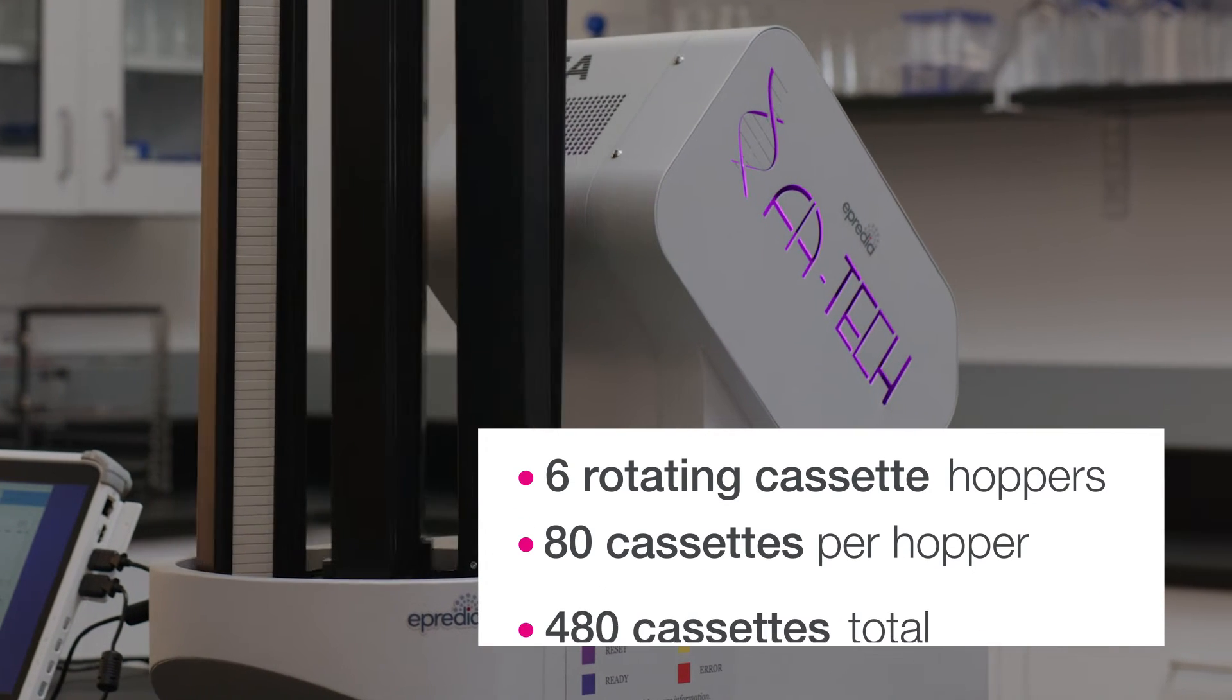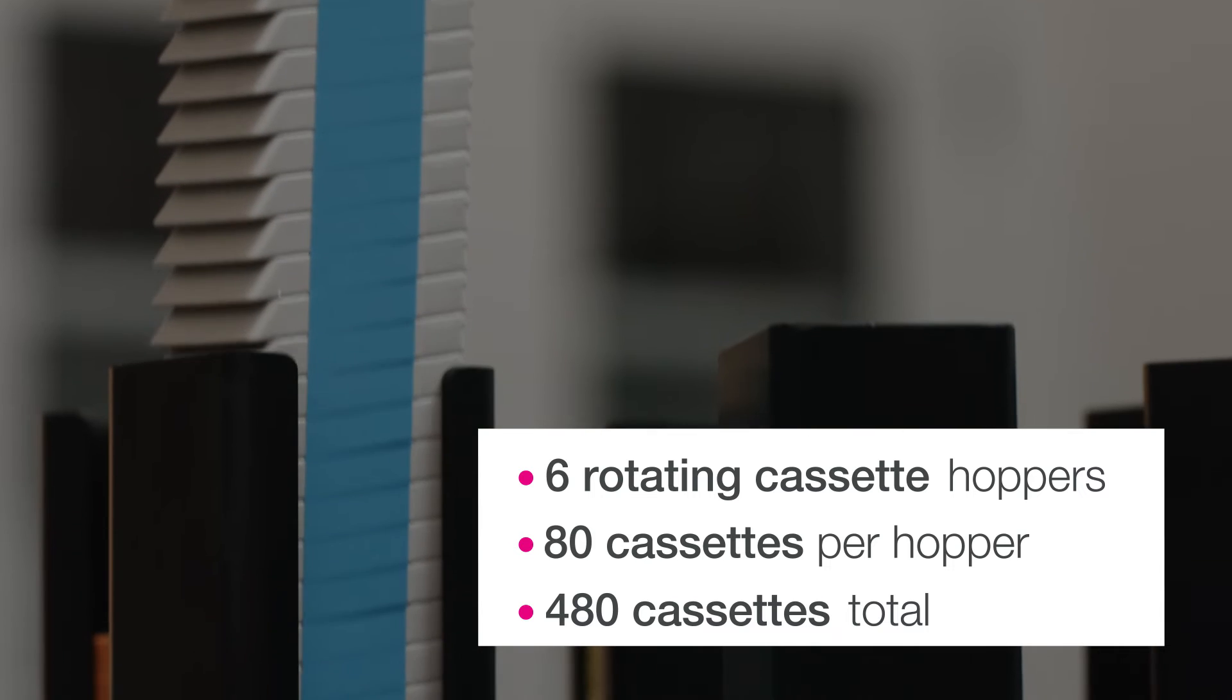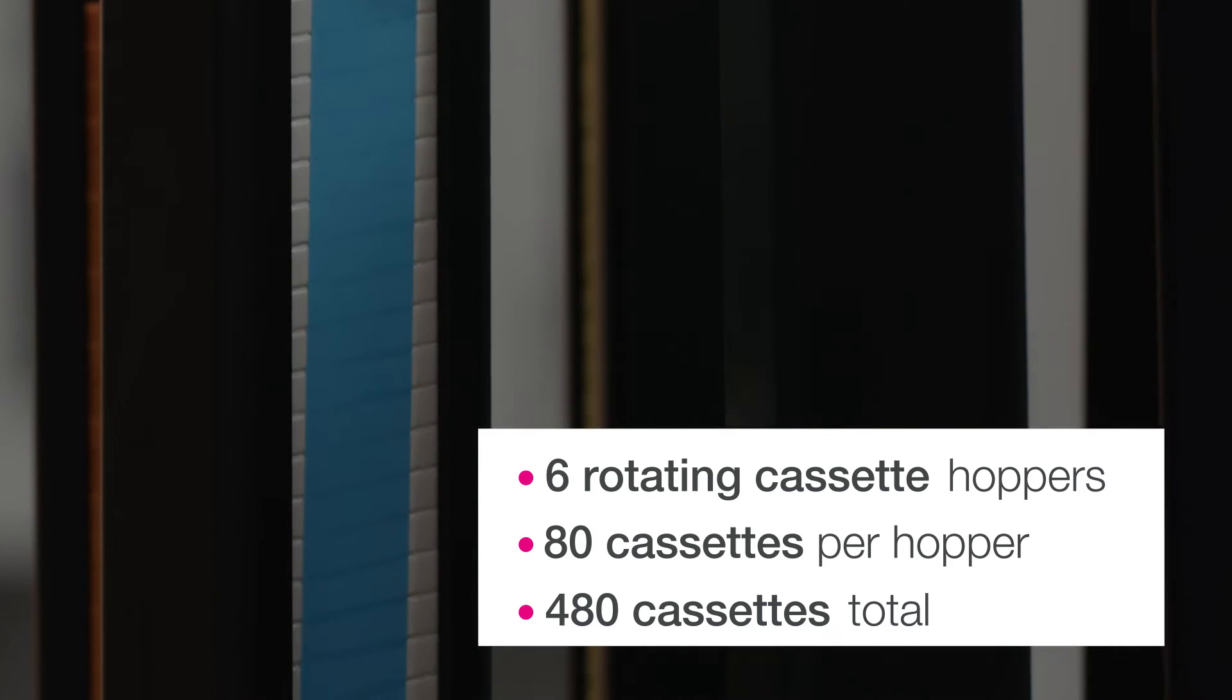The Vega can hold up to 6 different cassette types. Each hopper holds 80 cassettes, totaling 480 cassettes for the system.